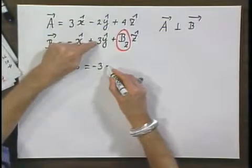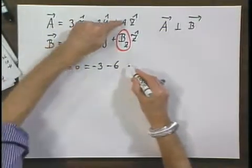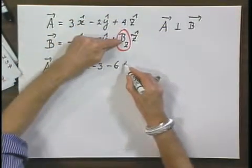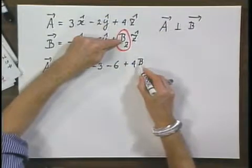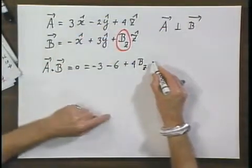The product of these components is minus six. And the product of these components is plus four BZ. That has to be zero.